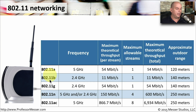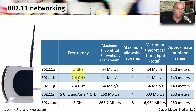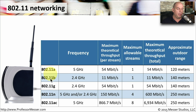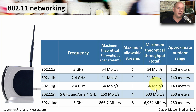802.11a and 802.11b were some of the very first standards. 802.11a used 5 gigahertz frequencies, while 802.11b used 2.4 gigahertz frequencies, with maximum theoretical throughputs of 54 megabits per second and 11 megabits per second respectively. 802.11g was effectively an upgrade to 802.11b using the same frequencies but increasing speed up to 54 megabits per second.